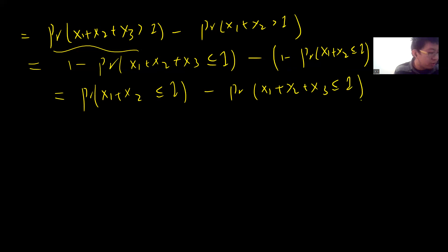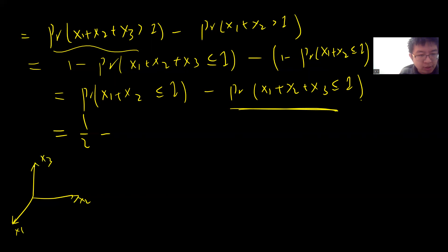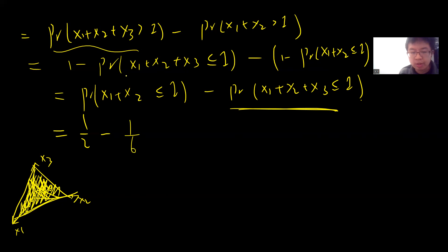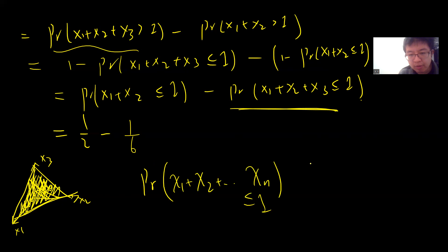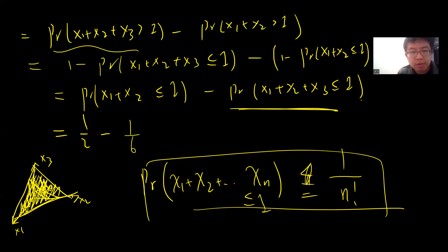This is easy to compute. For X1+X2 ≤ 1, the probability is 1/2. For X1+X2+X3 ≤ 1, you have three dimensions and the region is a tetrahedron, so its volume is 1/6. In general, the volume of the region X1+...+Xn ≤ 1 is 1/n! — this can be proved by calculus. So f(3) = 1/2 − 1/6.